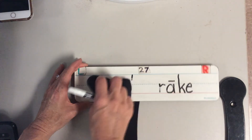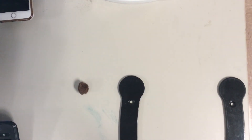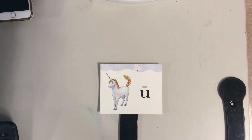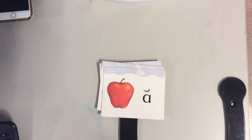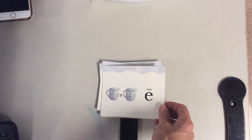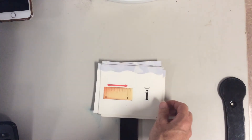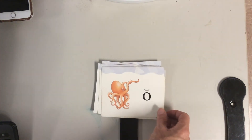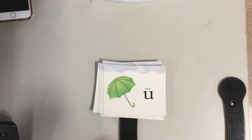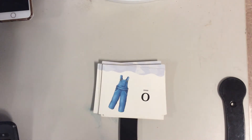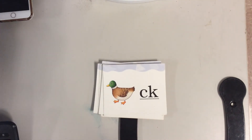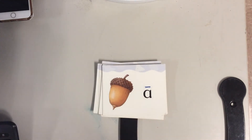So we're going to review our long and short vowels and our CK sound. Unicorn — long U. Elephant — short E. Apple — short A. Equals — long E. Inch — short I. Octopus — short O. Umbrella — short U. Icicle — long I. Overalls — long O. Duck — CK. And acorn — long A.